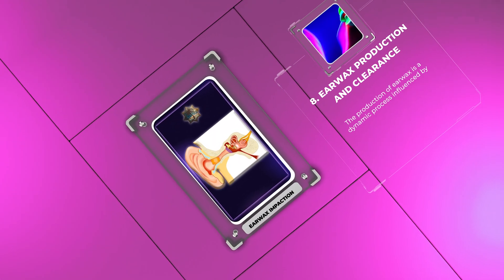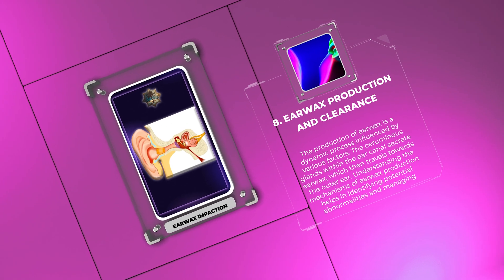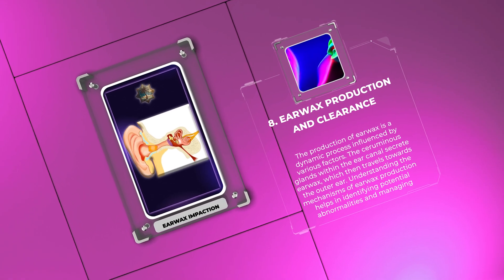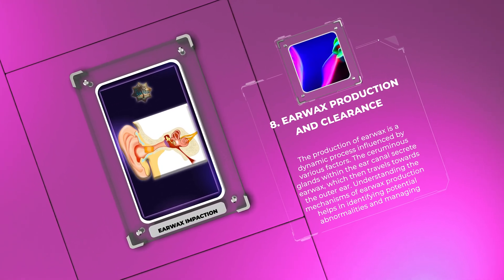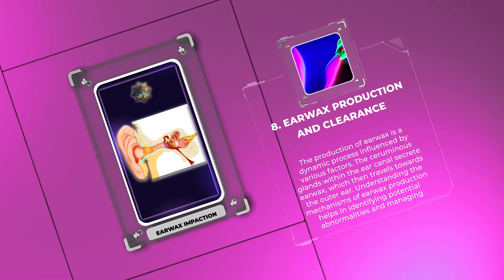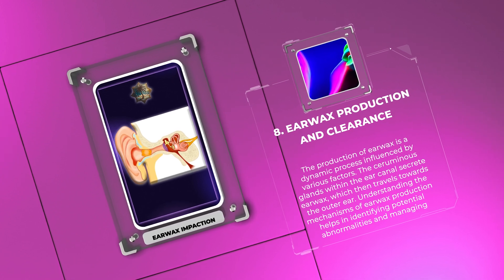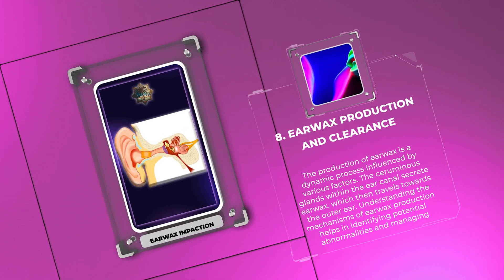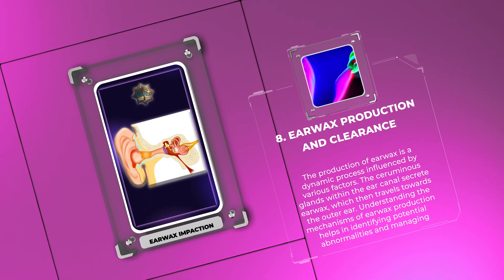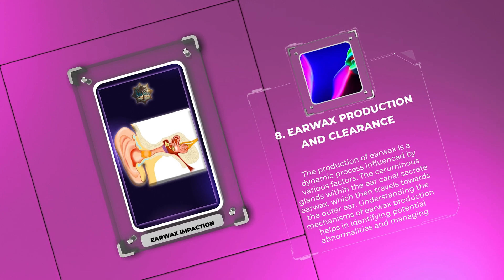The production of earwax is a dynamic process influenced by various factors. The ceruminous glands within the ear canal secrete earwax, which then travels towards the outer ear. Understanding the mechanisms of earwax production helps in identifying potential abnormalities and managing impaction effectively.